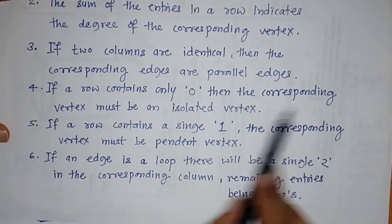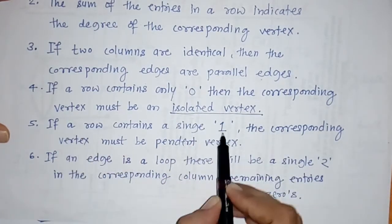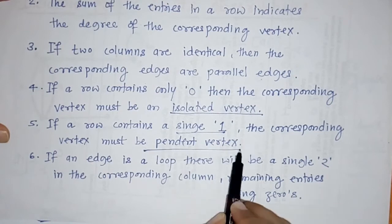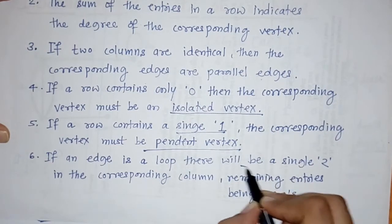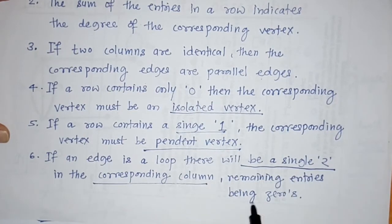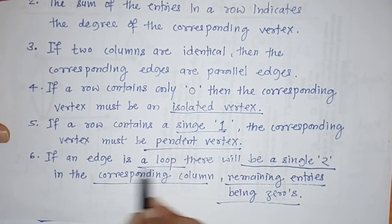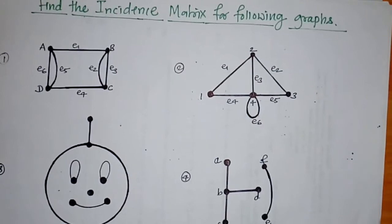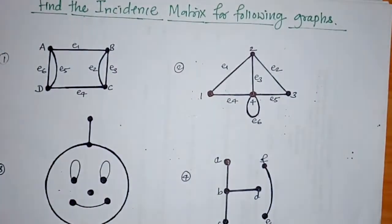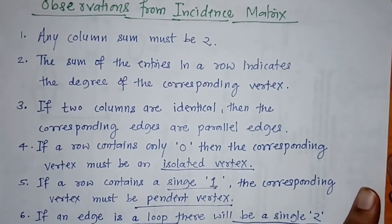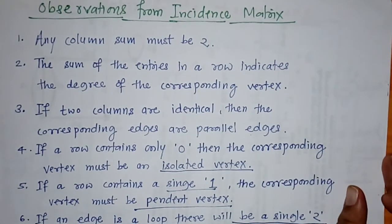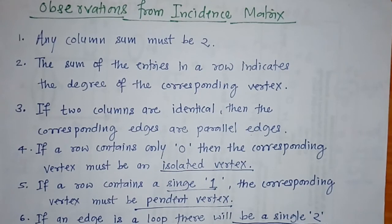To summarize the observations: if a row contains only 0s, the corresponding vertex is an isolated vertex. If a row contains a single 1, the corresponding vertex is a pendant vertex. If a column contains a single entry of 2, the corresponding edge is a loop. These are the observations we can find from the incidence matrix. We can apply these to both simple graphs and multigraphs. Thank you.